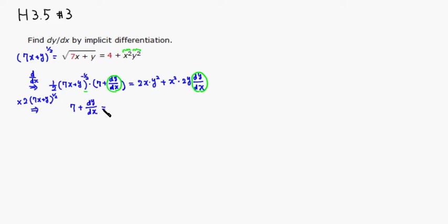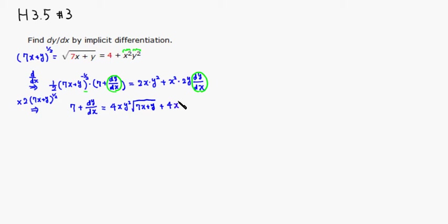On the right side, 2 times 2 gives 4, then we have x times y squared times the square root of 7x plus y. For the second term, multiplying by the same thing gives 2 times 2 equals 4, times x squared times y times the square root of 7x plus y, and we still have dy/dx.